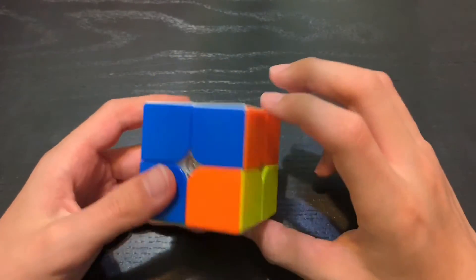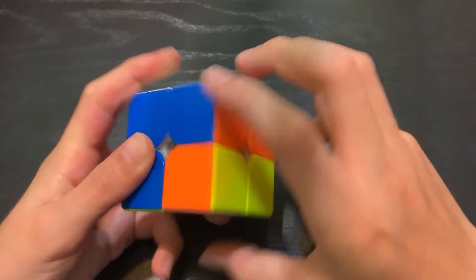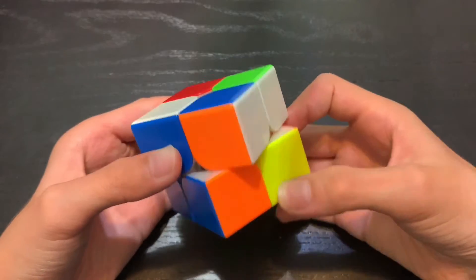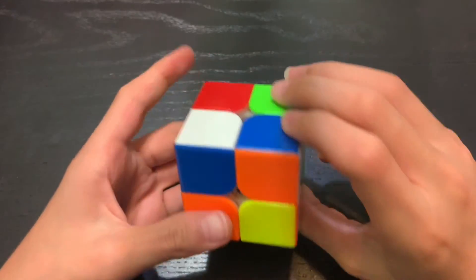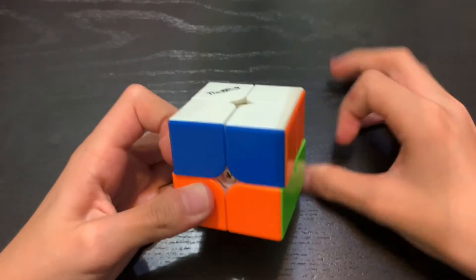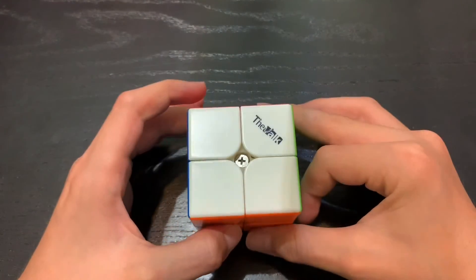Now I will flip it upside down and do R, U, R prime, U prime, until this corner is flipped. So two times here. And then turn this way and do four times. And just turn it back here. And that's it.